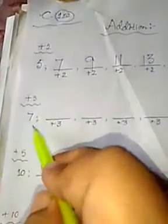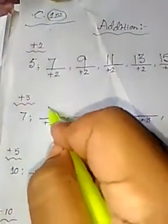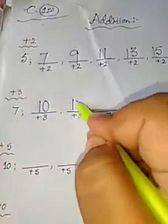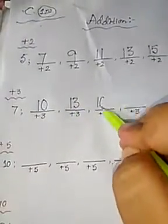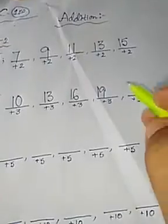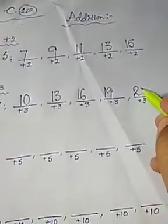So let's start. Plus 3, basic number 7. So 7 plus 3 is 10, plus 3 is 13, plus 3 is 16, plus 3 is 19, plus 3 is 22.